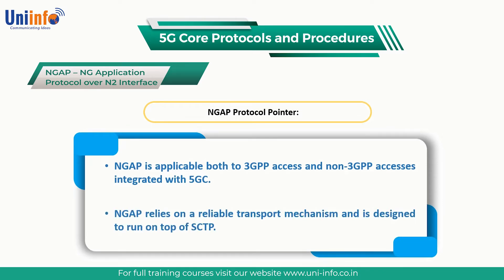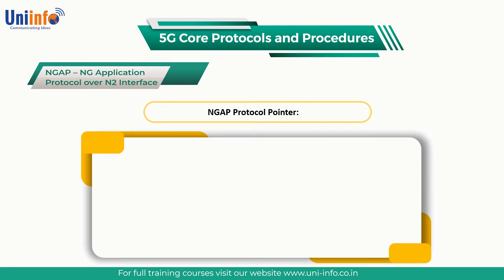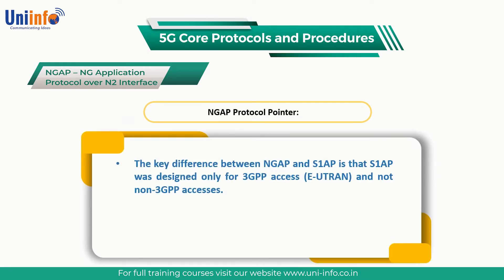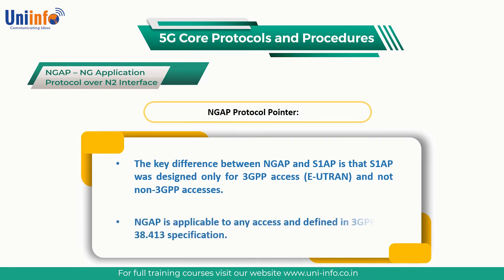Sixth, NGAP relies on a reliable transport mechanism and is designed to run on top of SCTP. Seventh, the key difference between NGAP and S1AP is that S1AP was designed only for 3GPP access, i.e., EUTRAN, and not non-3GPP accesses. Eighth, NGAP is applicable to any access and is defined in 3GPP TS 38.413 specification. Support for specific parameters related to non-3GPP accesses has been added to the protocol when needed.